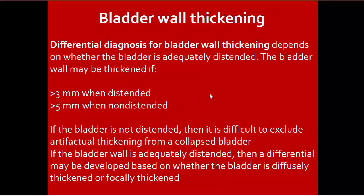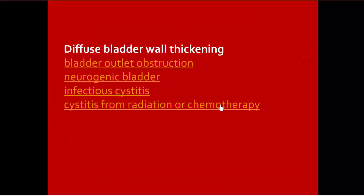Bladder wall thickening differential diagnosis depends on whether the bladder is adequately distended. Bladder wall is considered thickened if more than 3 mm when distended, or more than 5 mm when non-distended. If the bladder is not distended, it is difficult to exclude artifactual thickening from a collapsed bladder. If adequately distended, the differential may be based on whether thickening is diffuse or focal.